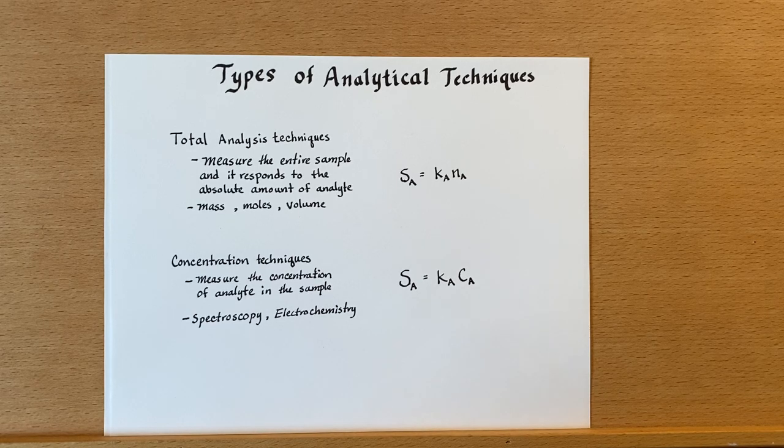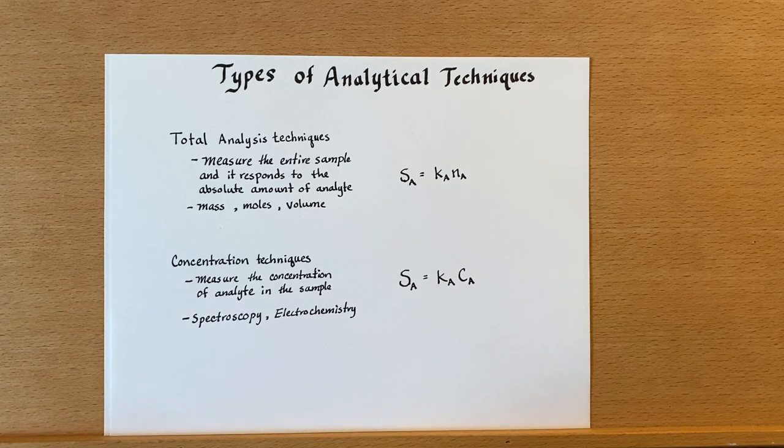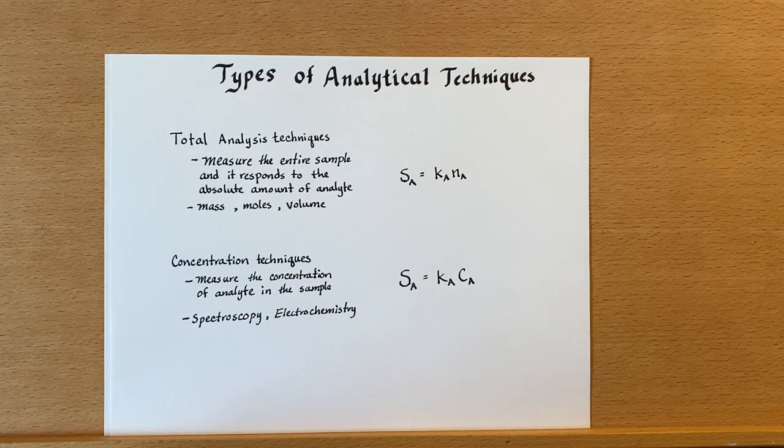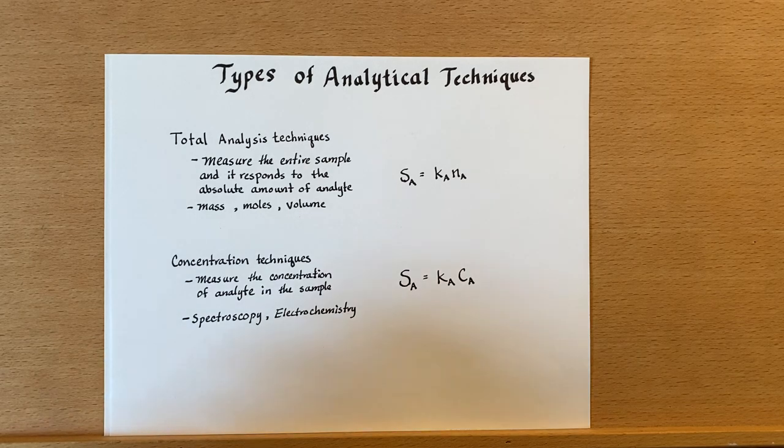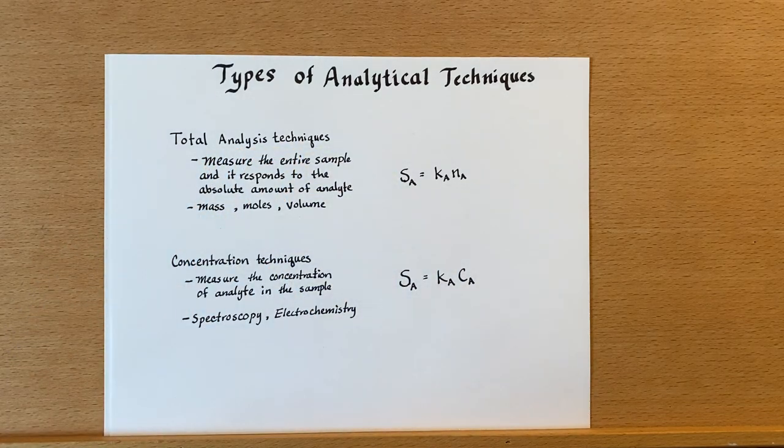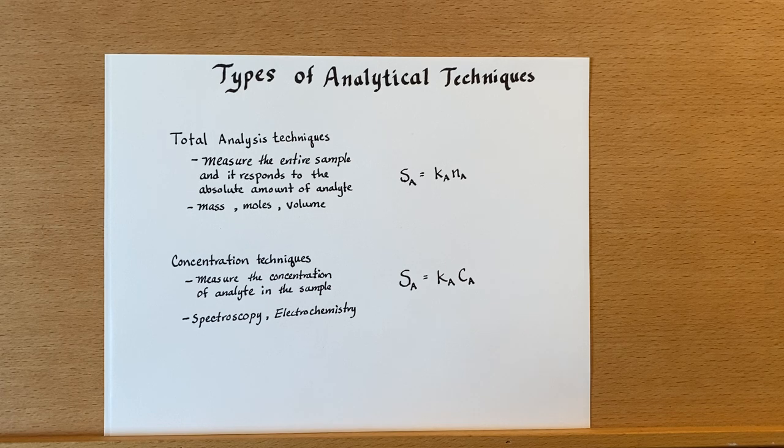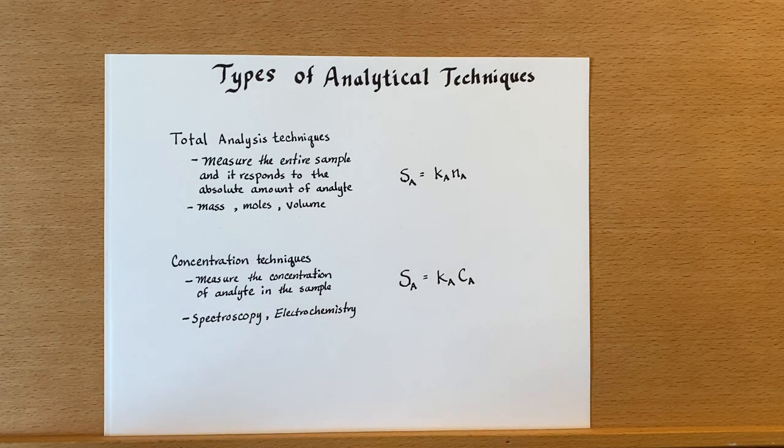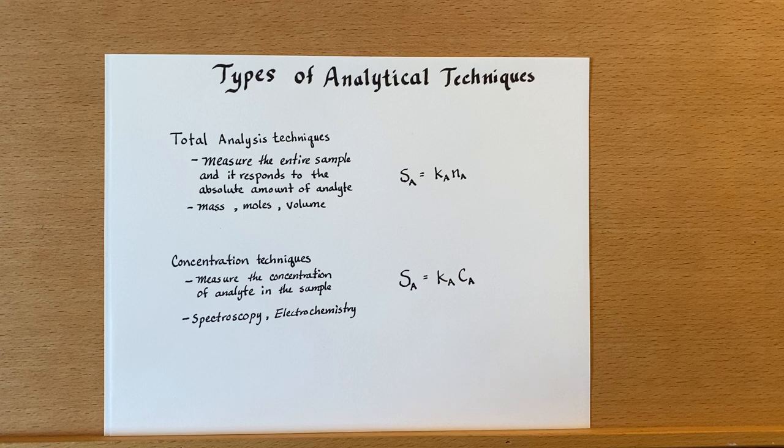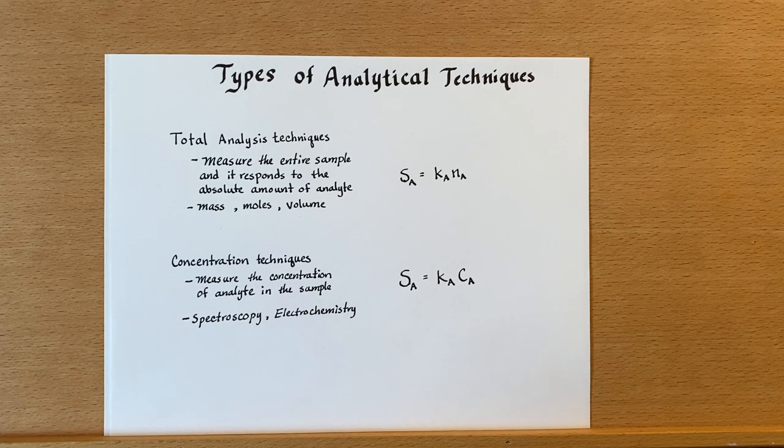Let's now talk about two broad categories of analytical techniques. The first one we'll describe are called total analysis techniques. These are sometimes referred to as old techniques or original techniques. That's simply because that's what we started out with in analytical chemistry.